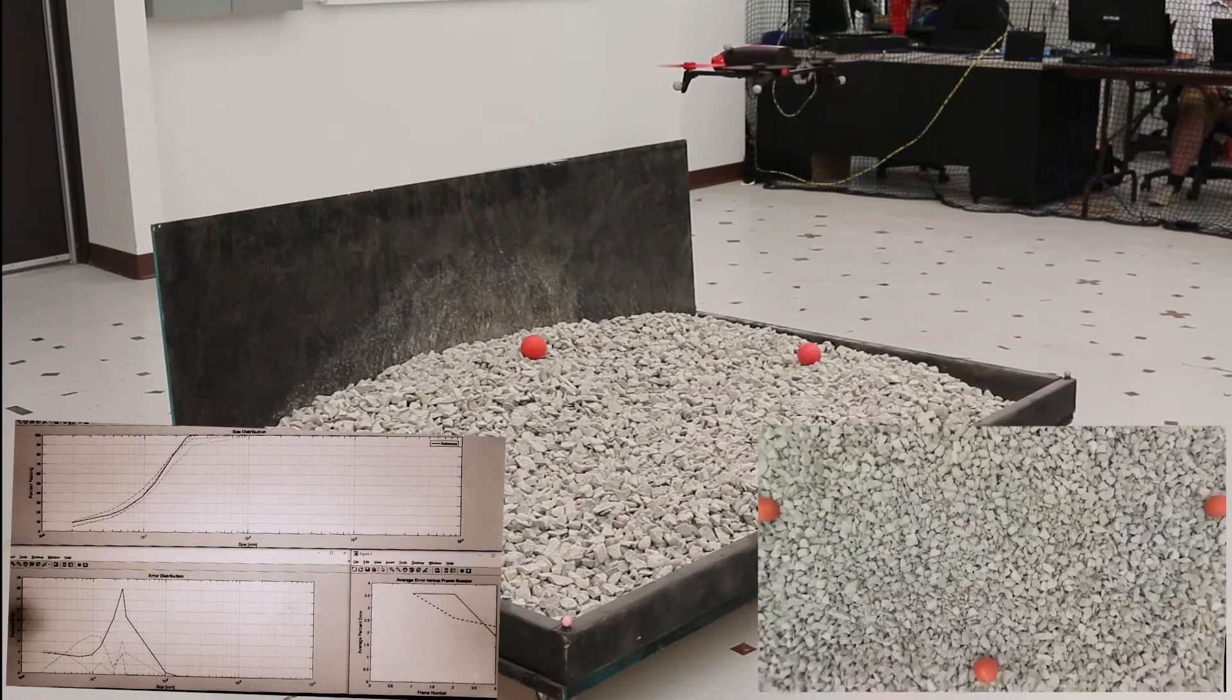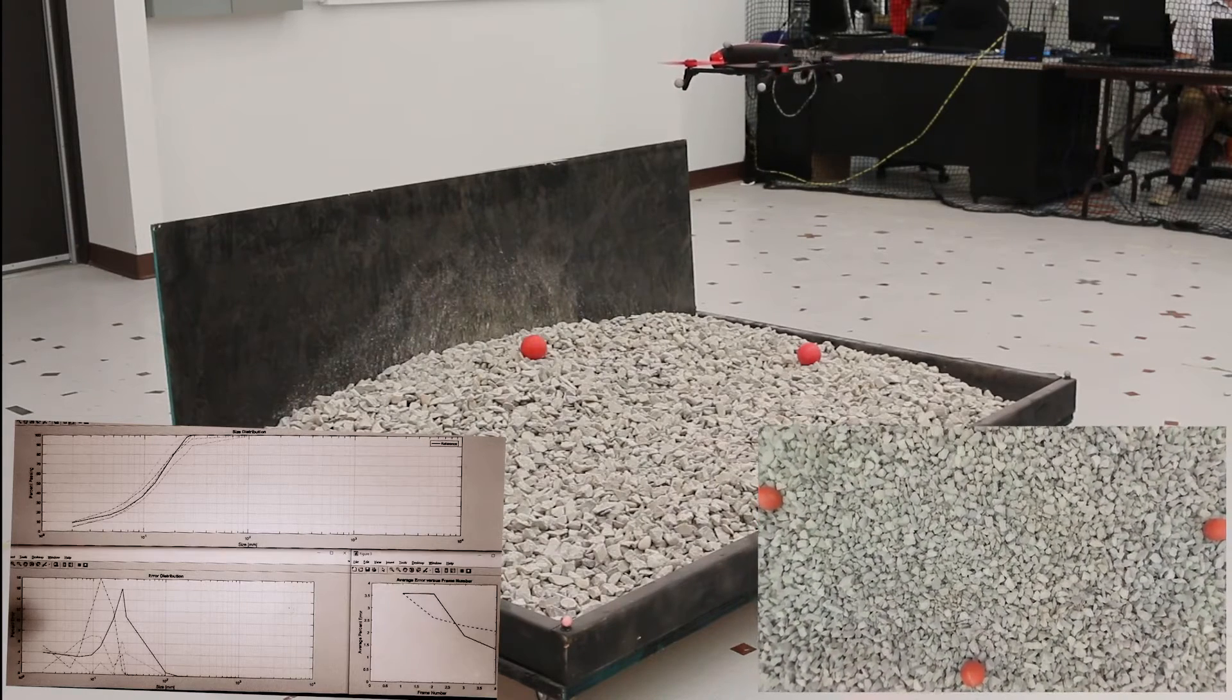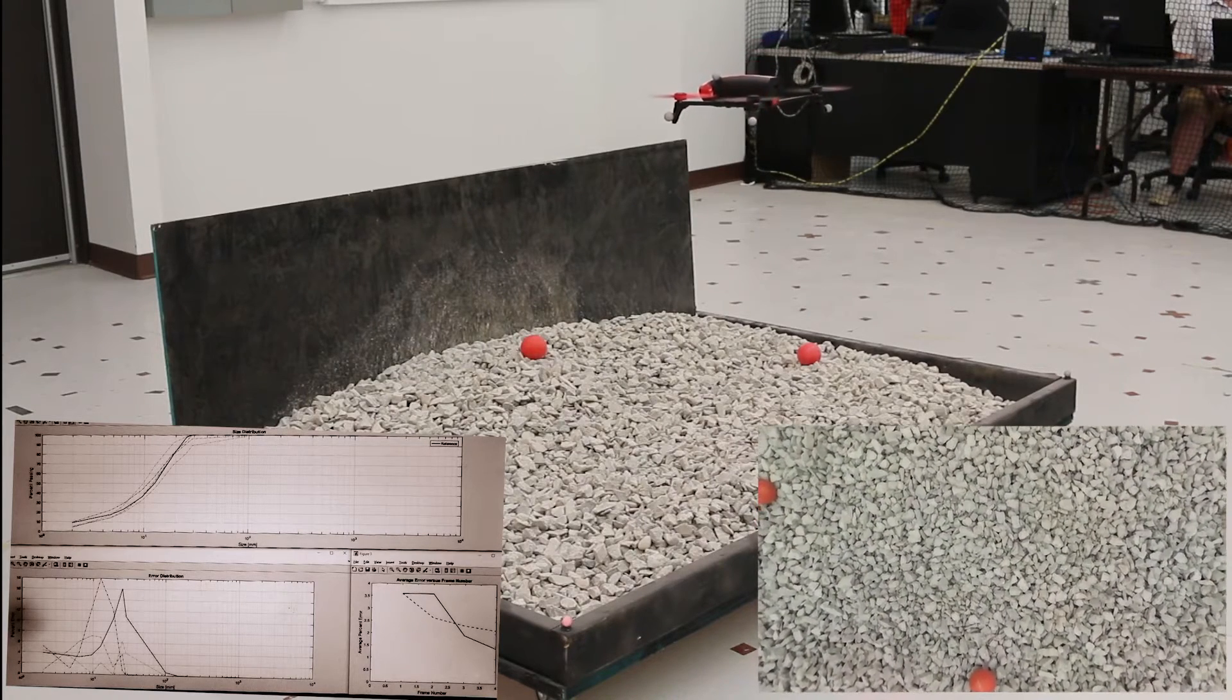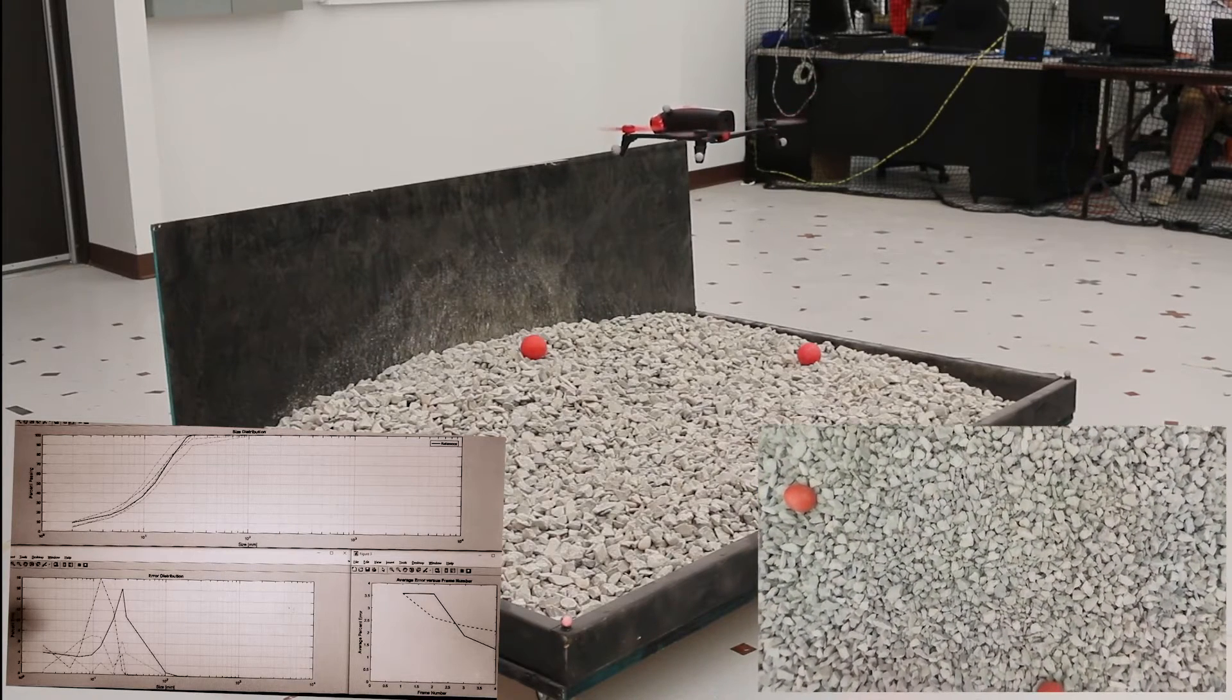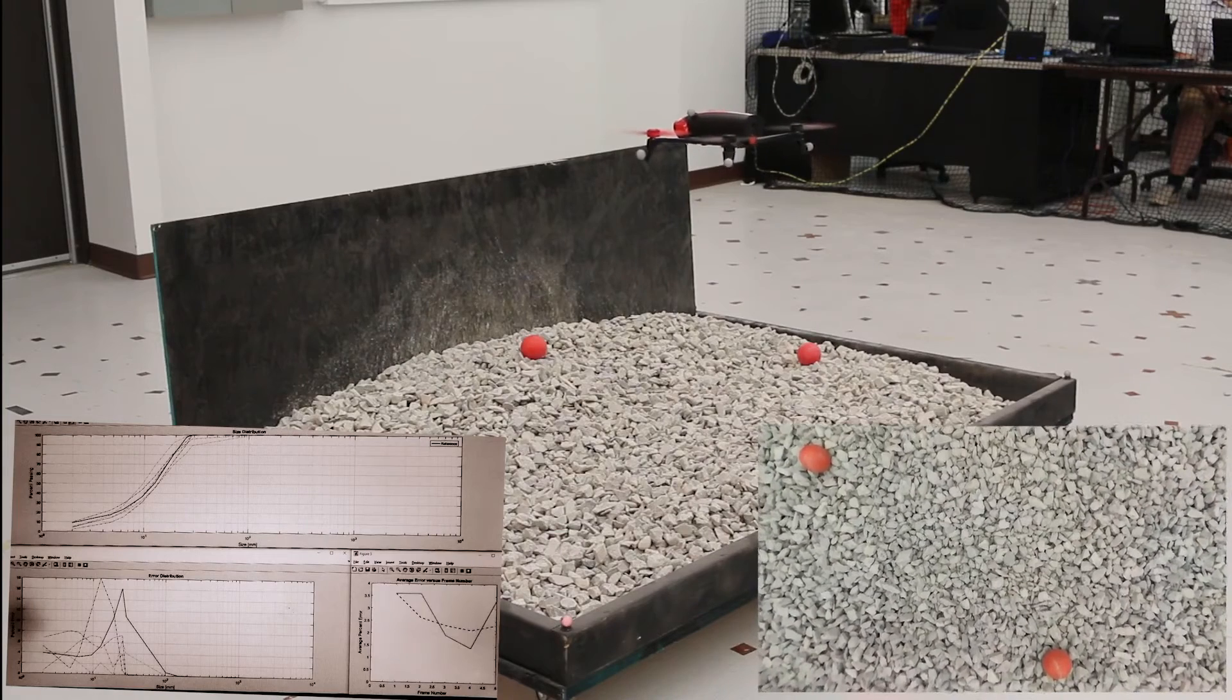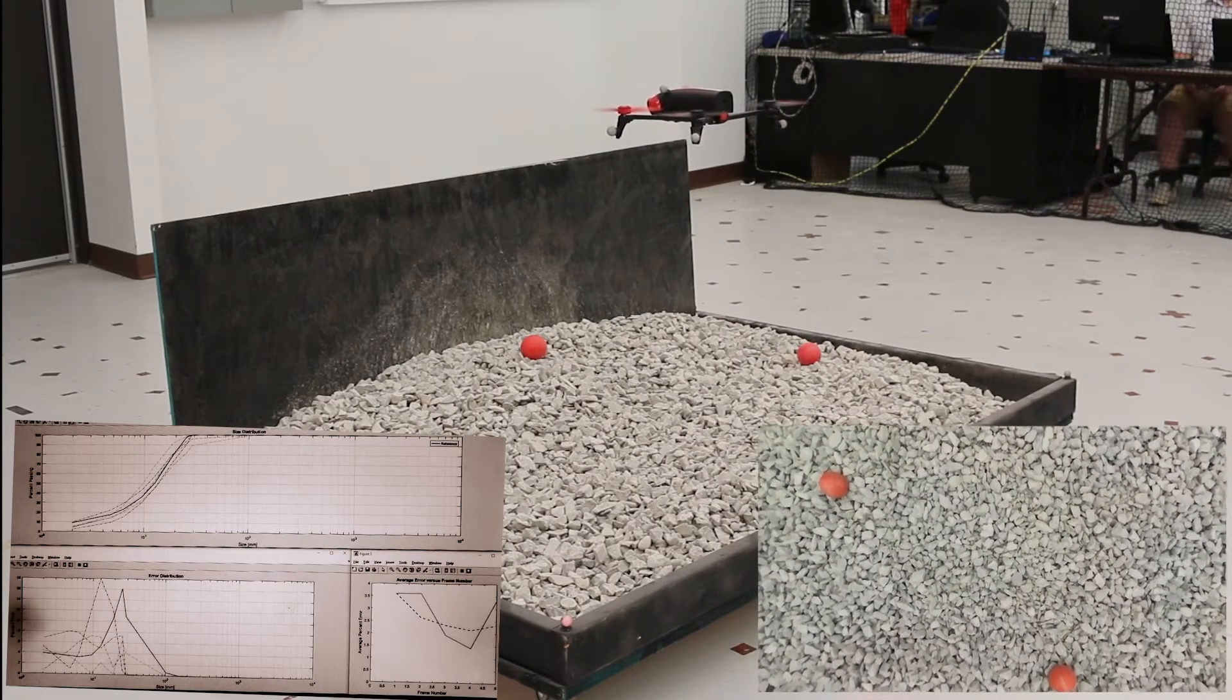The resulting distribution is plotted as dashed lines on the lower left while the error distribution and overall error is tracked below. Each line plotted represents a different sample location in the UAV's mission plan.